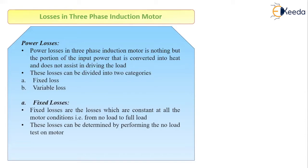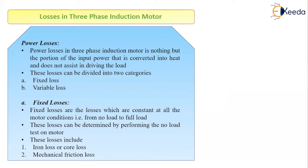Fixed losses can be determined by performing the no-load test on the motor. The no-load test is very similar to the open circuit test performed on a transformer. This no-load test, which we perform on the 3-phase induction motor to determine the fixed losses, is very similar to the open circuit test of the transformer. The losses that come under the category of fixed losses are: first, iron or core loss, and second, mechanical friction loss.